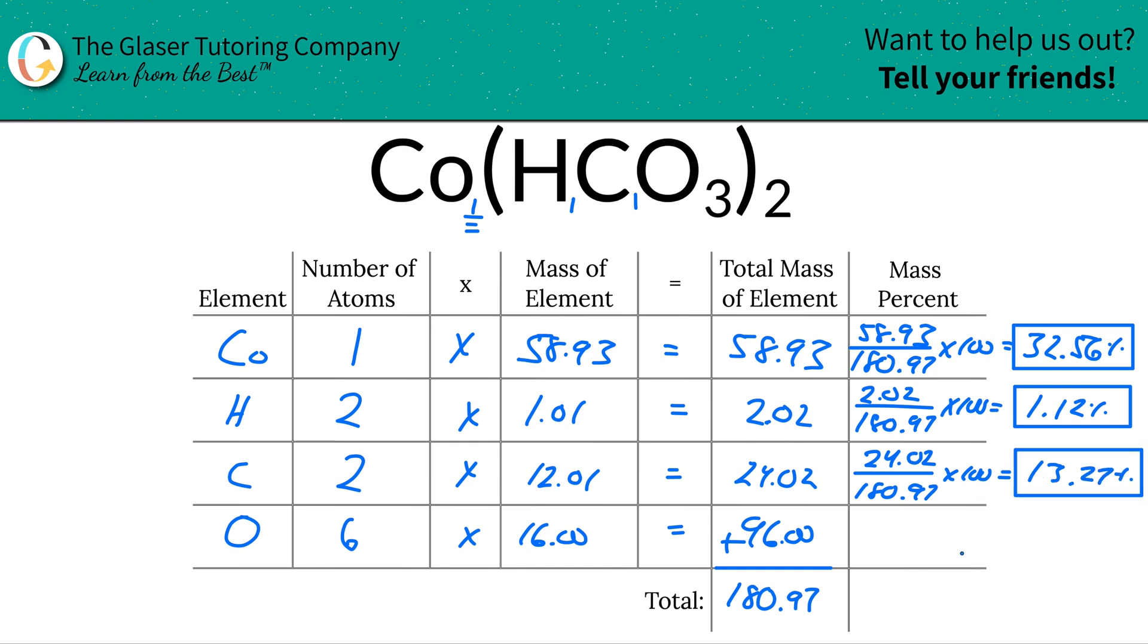And then last but not least, we will do the 96. I'm not going to write all the zeros. 96 over that 180.97, times that by 100. And here we get a percentage of about 53.05%.